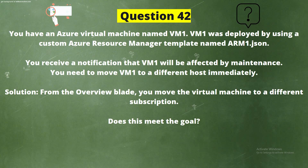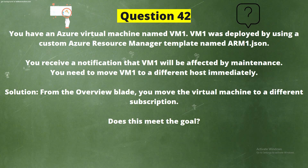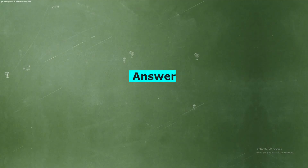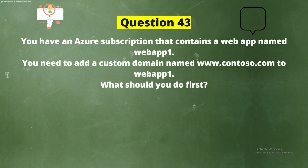Question 42: You have an Azure virtual machine named VM1, deployed using a custom Azure Resource Manager template named arm1.json. You receive a notification that VM1 will be affected by maintenance. You need to move VM1 to a different host immediately. Solution: From the Overview blade, you move the virtual machine to a different subscription. Does this meet the goal? Option A: Yes. Option B: No. The correct answer is Option B: No.